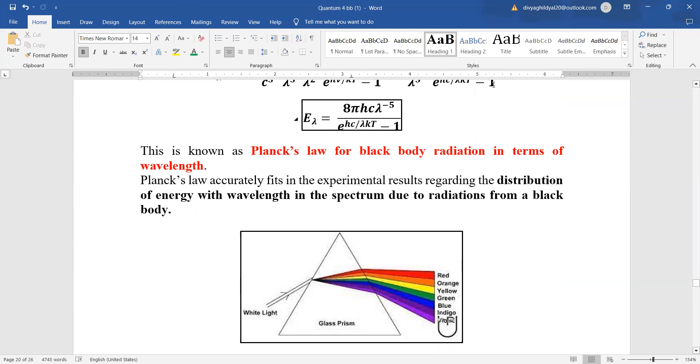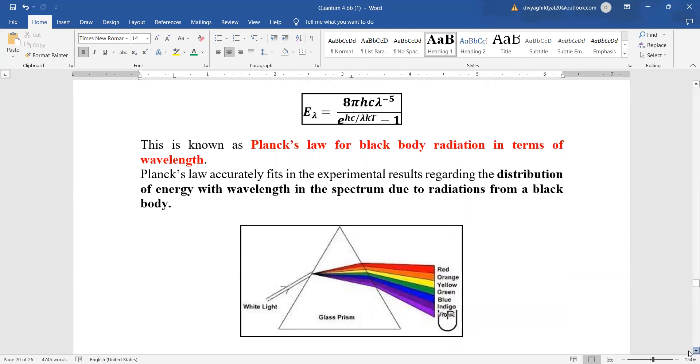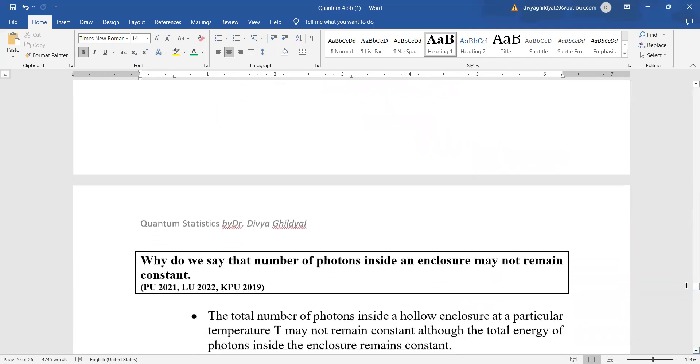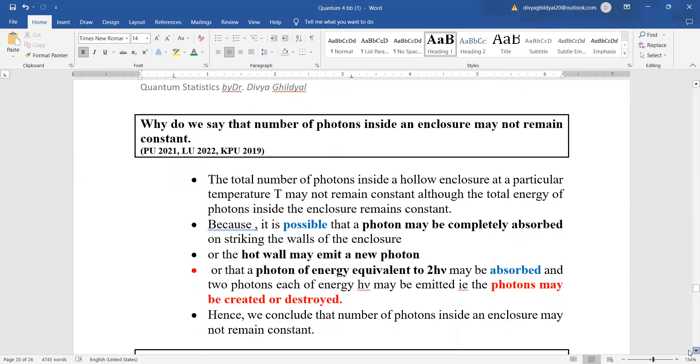Planck's law accurately fits many experimental results where we are discussing the distribution of energy with wavelength in the spectrum due to radiation from a black body. The most common example is how light splits in a prism.